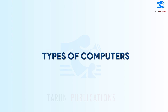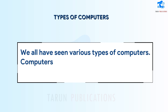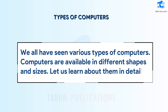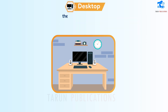Types of Computers. We all have seen various types of computers. Computers are available in different shapes and sizes. Let us learn about them in detail. Desktop: A desktop is a computer which we keep on the desk or on a table. These computers are available in various sizes but are generally big in size.